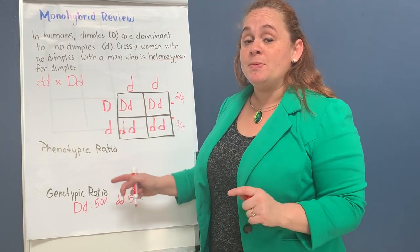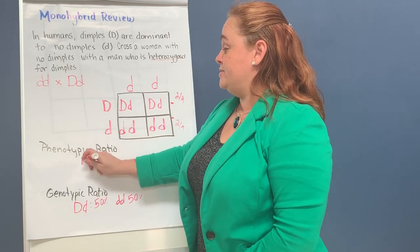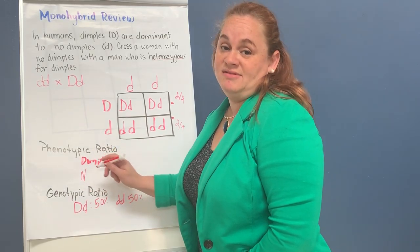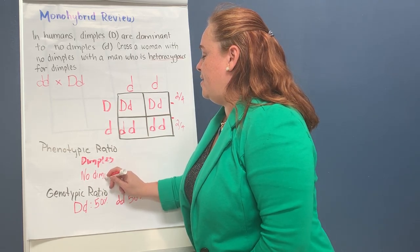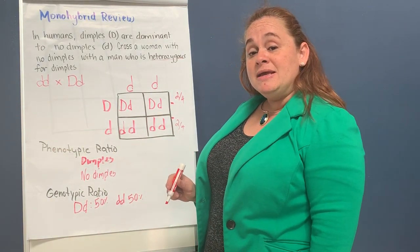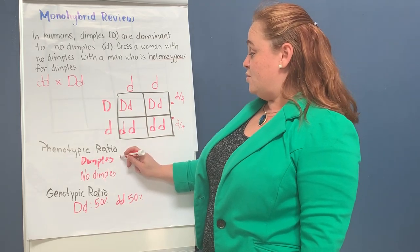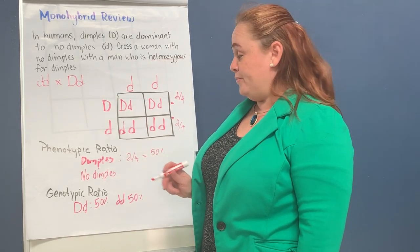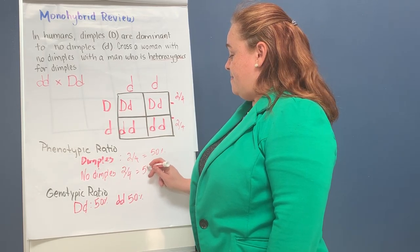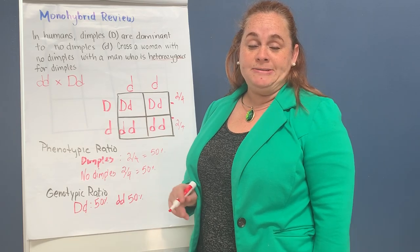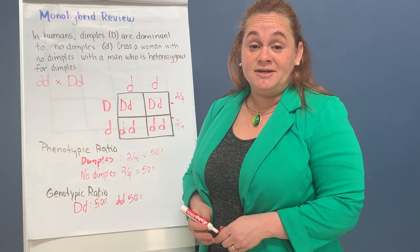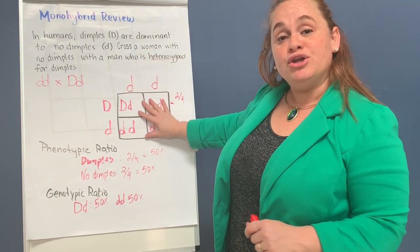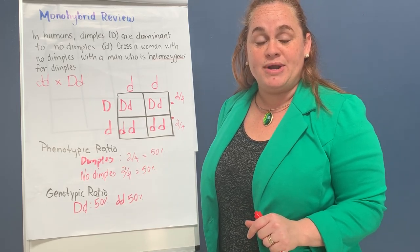For the phenotype — remember that phenotype is the physical trait — that means dimples or no dimples. There's a 50% chance, or two out of four, that the baby is going to have dimples, and there's a 50% chance the baby is going to have no dimples. It all depends on the genetic assortment — independent assortment, remember. That is your review for monohybrid crosses.